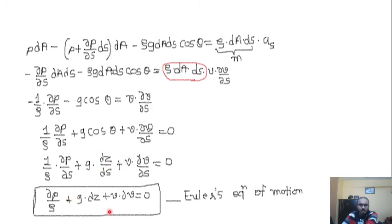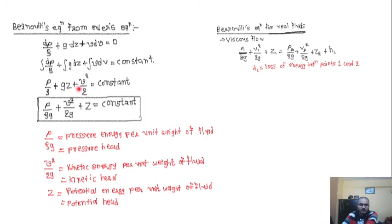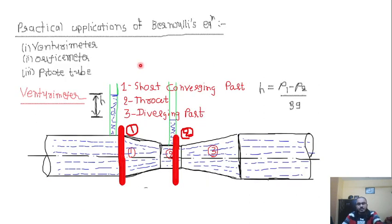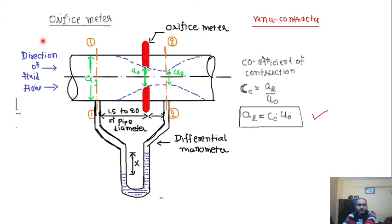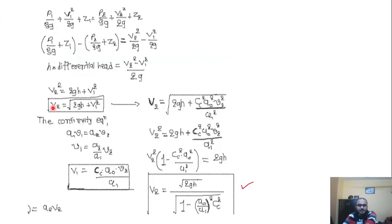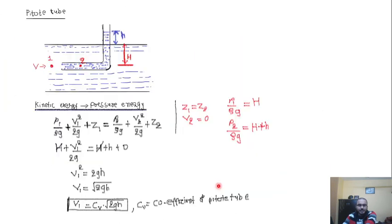We derived Euler's equation as dp/ρ + g dz + v dv = 0. Based on Euler's equation we obtained Bernoulli's equation for ideal flow and for real flow. Then the practical applications of Bernoulli's equation — three applications: Venturimeter, Orifice meter, and Pitot tube — and we obtained the value of Q for each.